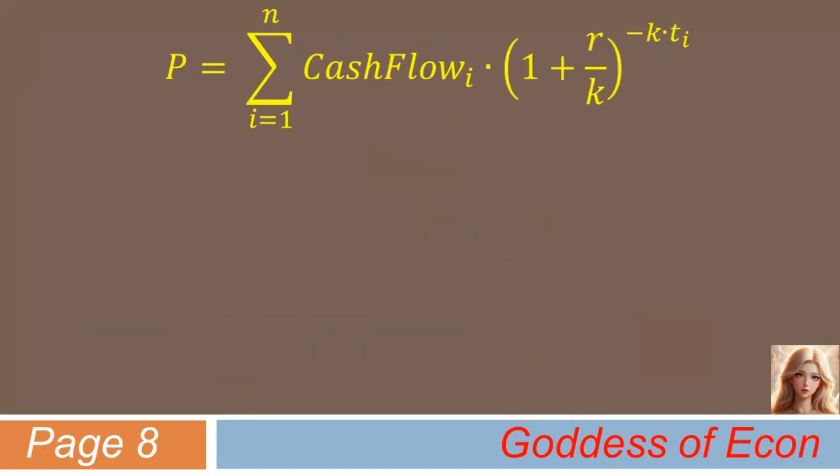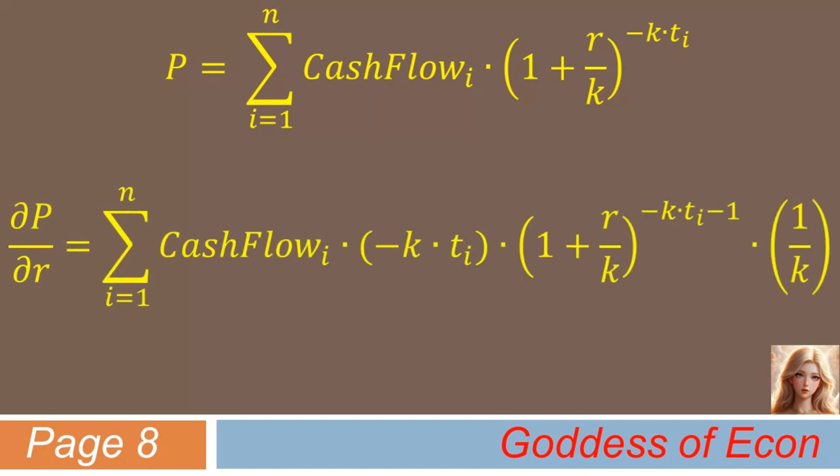Now, if you partially differentiate it with respect to r, it becomes like this. Are you with me, or are you lost? No worries even if you feel you're lost. I'll explain it one by one. First, minus k times ti, in parentheses, is simply a result of a power rule. You simply bring down the exponent as a coefficient and put it in front. And then you subtract 1 from the original exponent, as shown here.